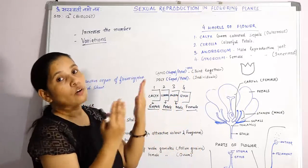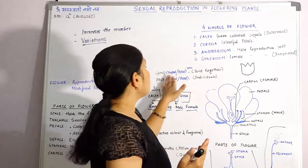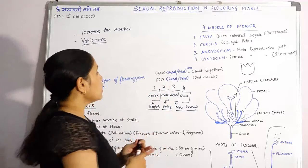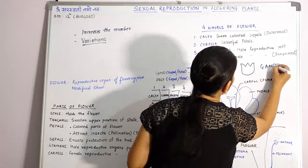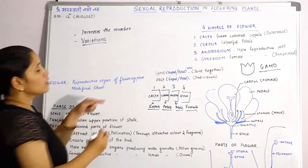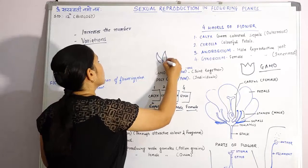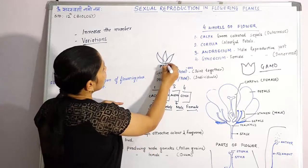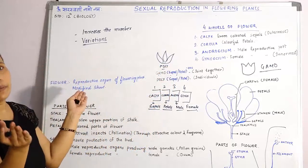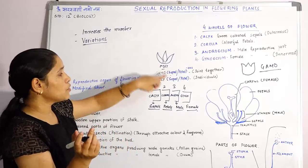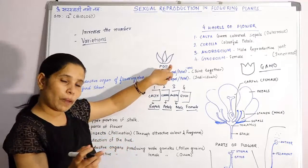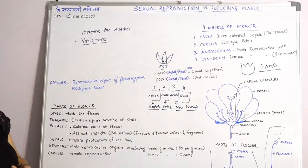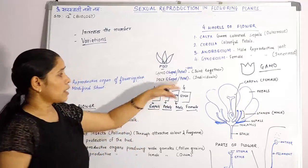Similarly in the case of petals, when petals are joined together and not easily separated — not presenting as individuals — they are known as gamopetalous. And in the case of poly, they are separated. When sepals can be easily separated, that case is known as polysepalous. And when petals are easily separated, they are known as polypetalous.